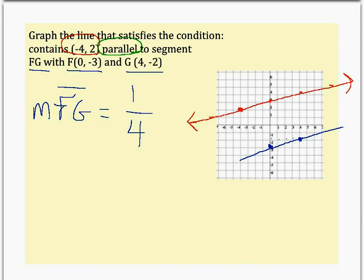The two lines are parallel. They have a positive slope. The line that I have in red passes through the point negative 4, 2 and is parallel to segment FG.